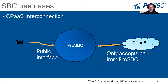There's also the CPaaS use case — Communication Platform as a Service. You can rent the service to achieve certain functionalities. The Pro SBC connects to the public interface of those CPaaS platforms, and the CPaaS ensures only traffic from the SBC is accepted, so traffic reaching the platform is protected.